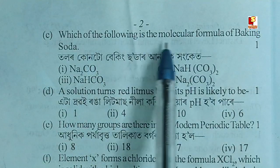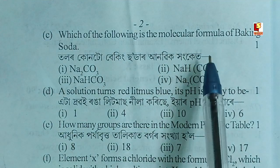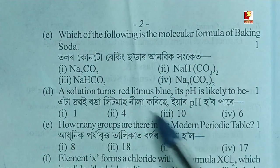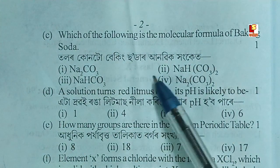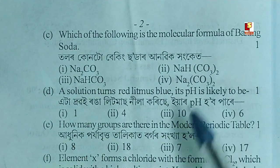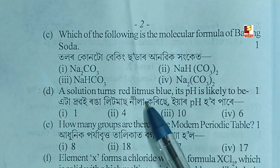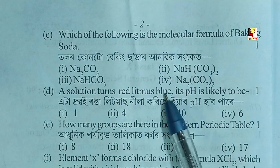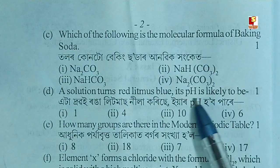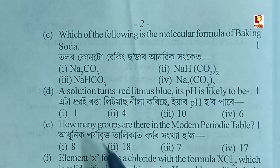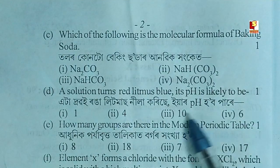Which of the following is the molecular formula of baking soda? The number is: a solution turns red litmus blue — its nature is likely to be a base.